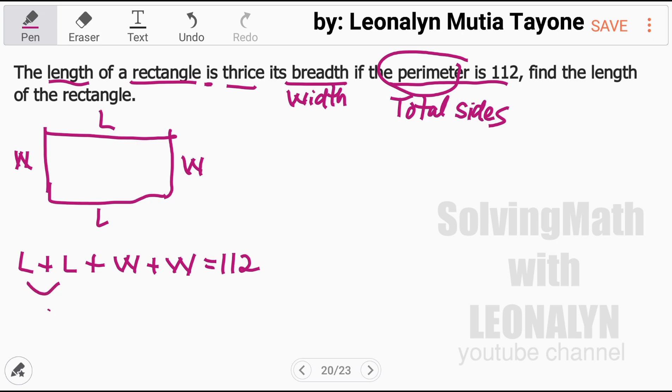That is equal to 112. Two L's, so 2L plus, two W's, that is 2W equals 112.